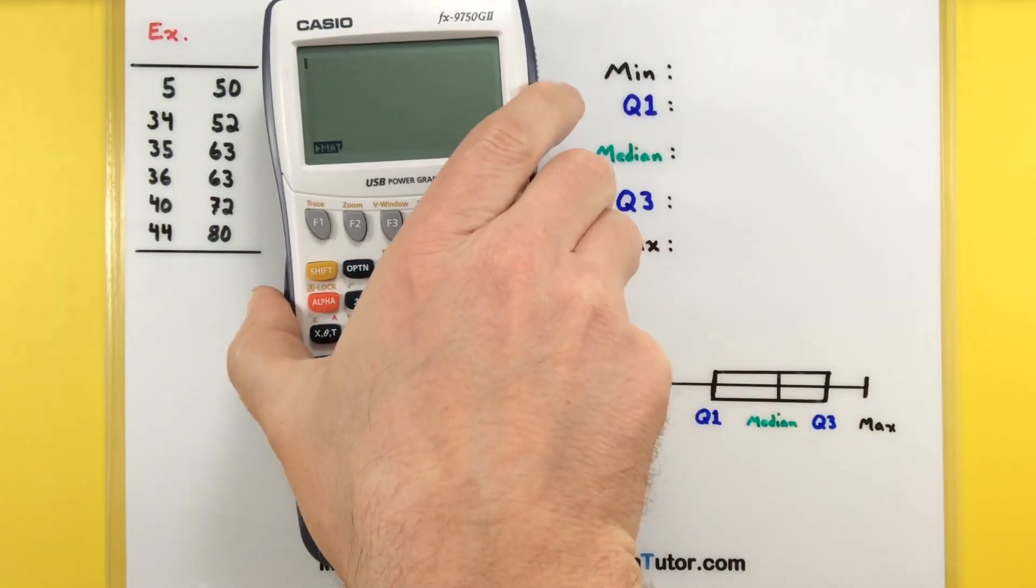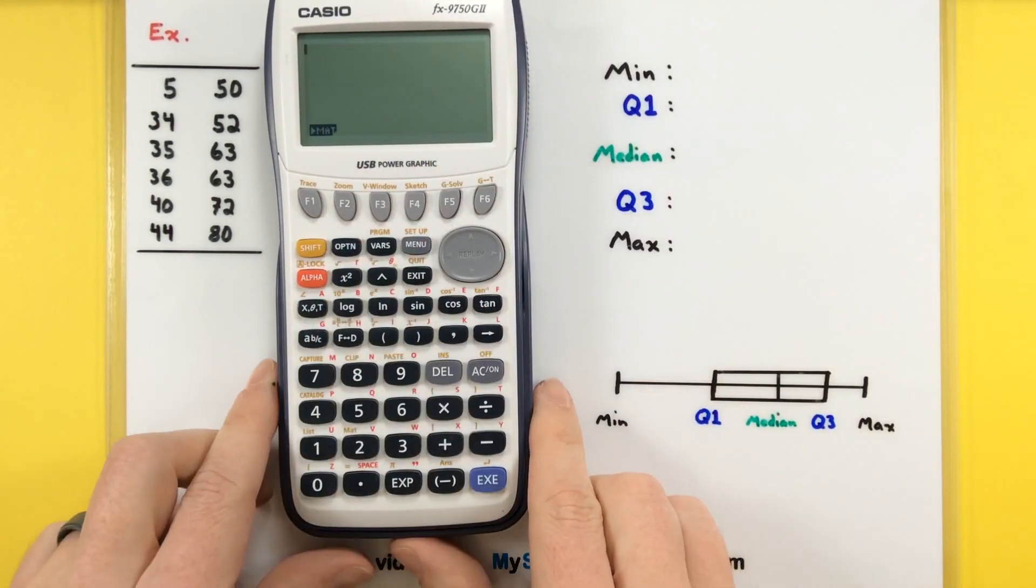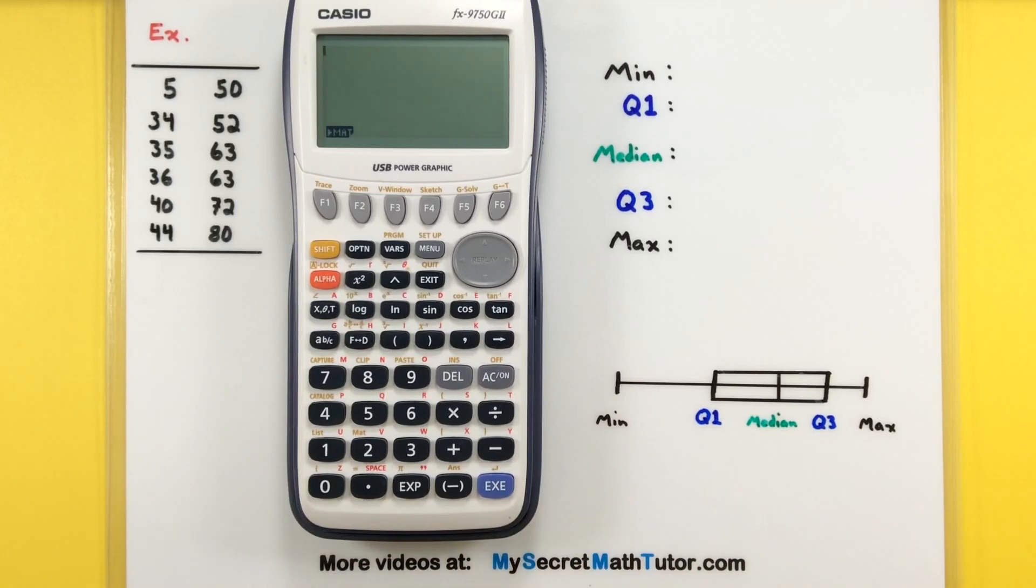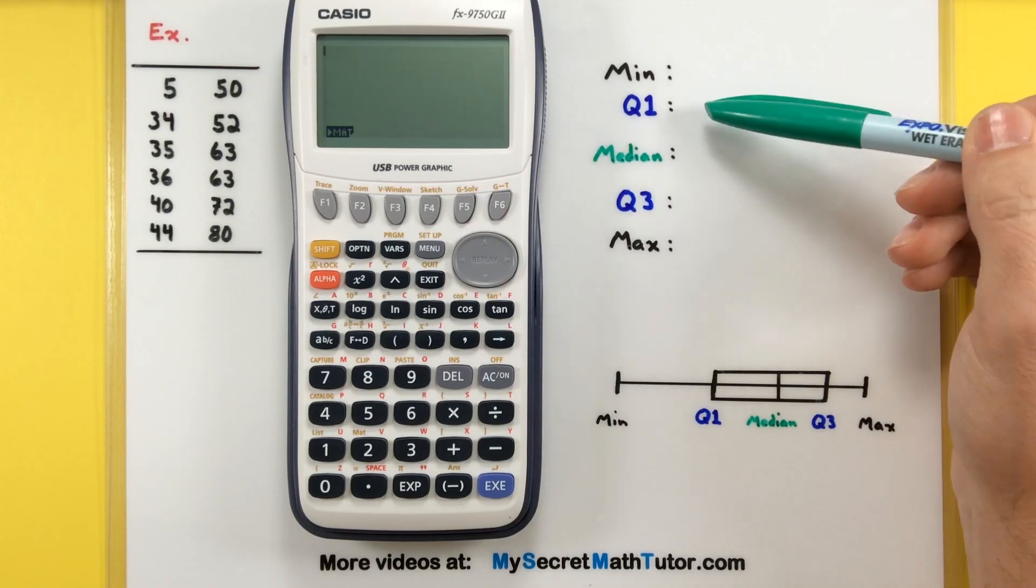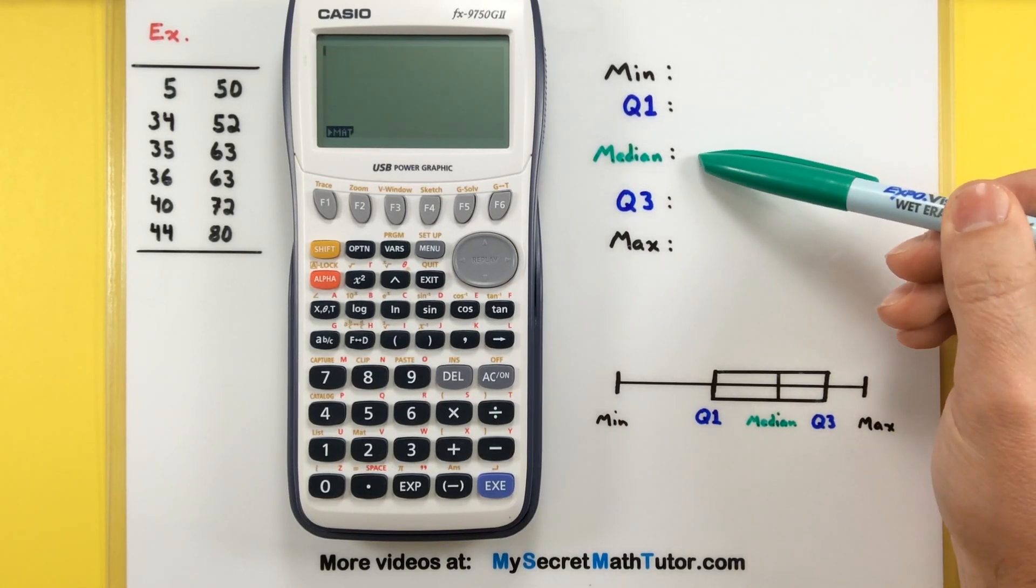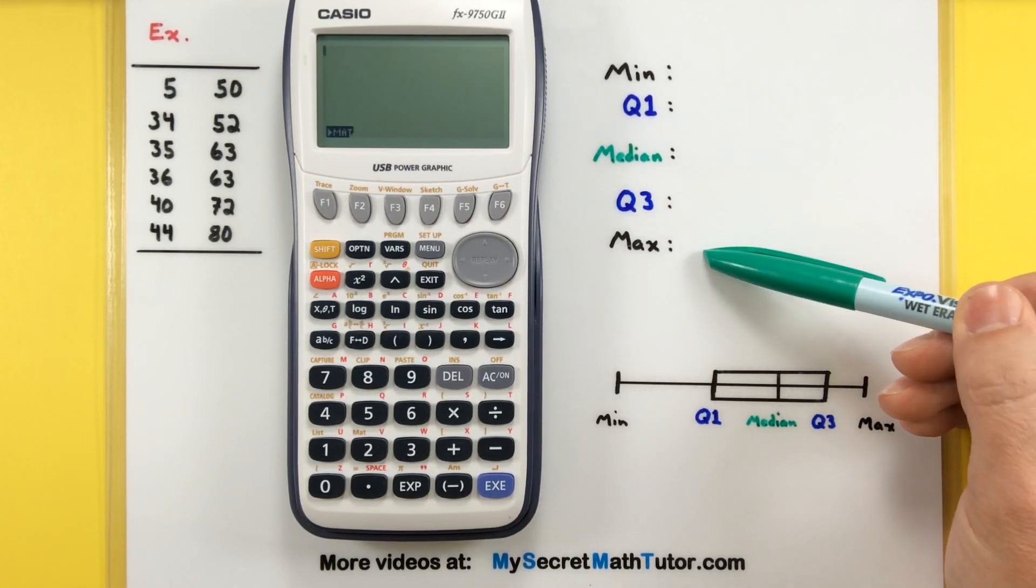So let's go ahead and grab some data and see if we can get that into our calculator so we can find our five-number summary. Now as a quick review, the five-number summary includes the minimum, the first quartile, the median, the third quartile, and the maximum.